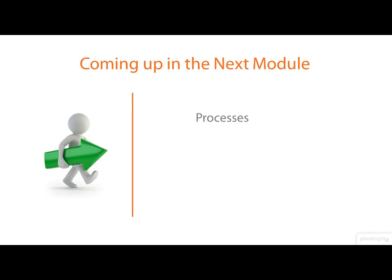Coming up in the next module, we're going to talk about processes, including the key system calls fork and exec, and we're going to talk about that most venerable of inter-process communication mechanisms, the pipe.